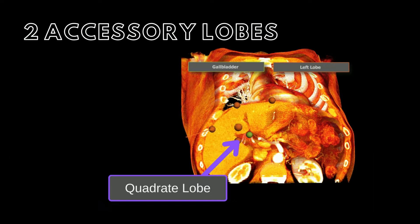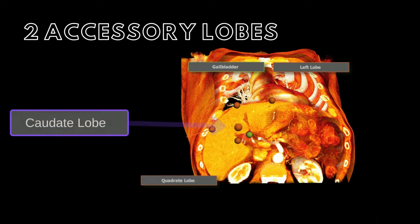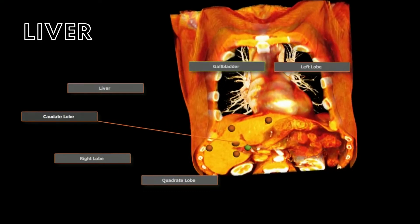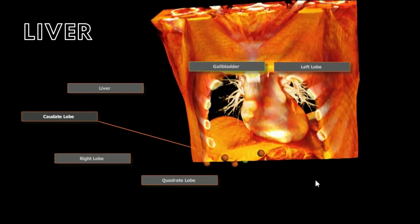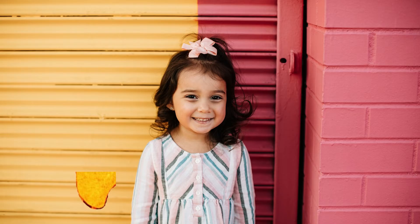The quadrate lobe is seen to the left of the gallbladder, on the inferior or lower side of the liver. The caudate lobe, which is on the posterior or back side of the liver, is surrounding the inferior vena cava. The liver is a unique organ in that it is the only organ capable of regeneration. Due to its regenerative abilities, a reduced-sized portion of an adult liver can be transplanted into a pediatric patient. Currently, living relatives can donate part of their liver for transplantation.